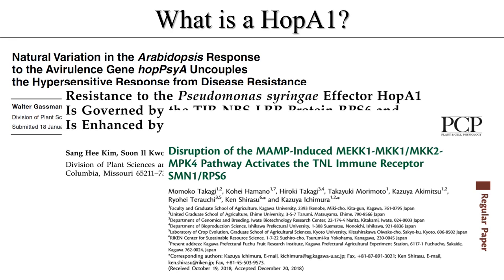The third paper describes that SMN1 is activated when the MAP kinase is broken, resulting in an immune response. The authors demonstrated throughout each experiment that HopA1 is not directly related to RPS6. So they conclude that some target protein would be involved in this pathway.